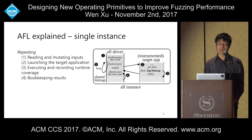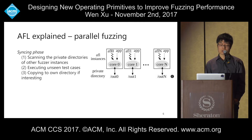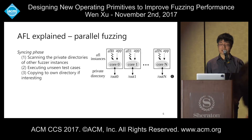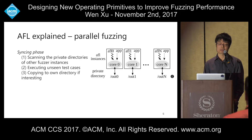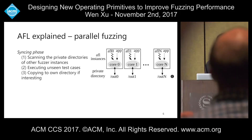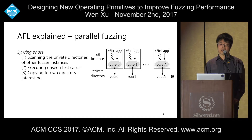AFL also natively supports parallel fuzzing. When multiple AFL instances run on different cores, periodically there is a syncing phase. AFL scans the private working directories of other fuzzers, and if it finds an unseen test case, it executes it. If that test case has new interesting code paths not yet discovered, it copies it to its own directory for future fuzzing.